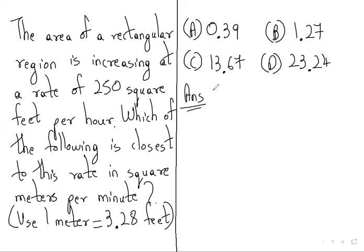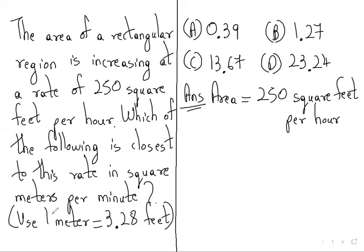First we will write what is given to us. Area equals 250 square feet per hour, and 1 meter equals 3.28 feet.